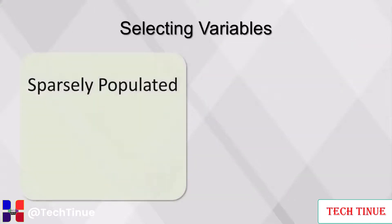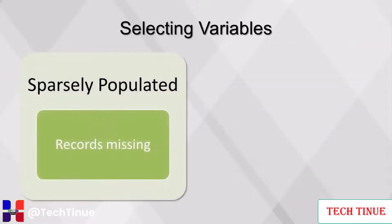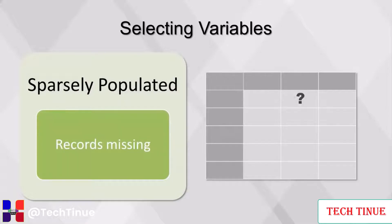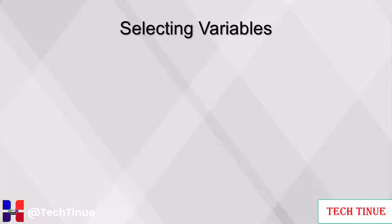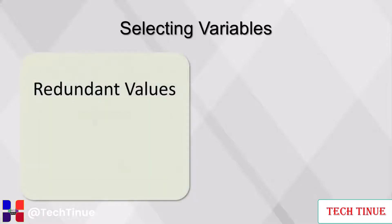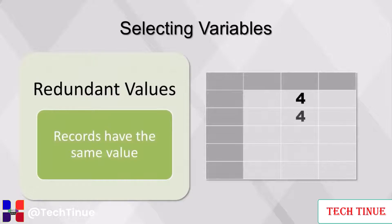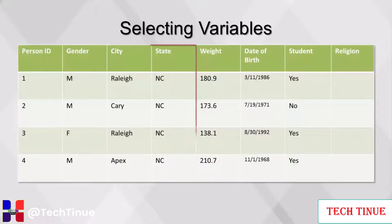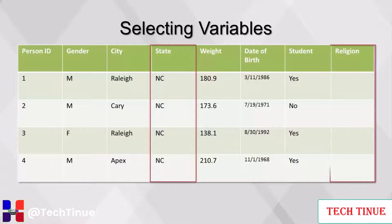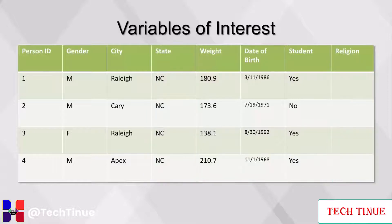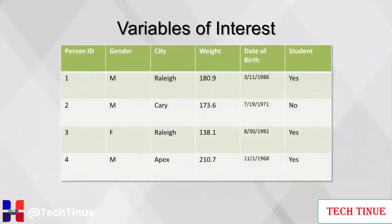Fields that are sparsely populated, meaning that a high percentage of records is missing, should not be selected. Fields with redundant values, meaning that a high percentage of records have the same value, should also not be selected. Techniques to identify these fields vary; for now, a visual inspection of the first few records can be used. From this table, we can remove the state column because all of its values are the same, and we can remove the religion column because it is sparsely populated.